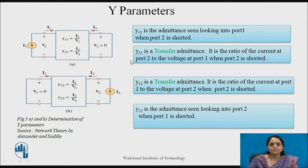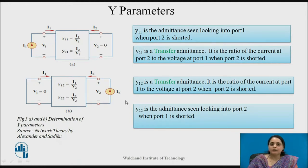Y21 is called the transfer admittance. In Figure 3b, port 1 voltage V1 has been short-circuited, and from this we can calculate Y12 and Y22. Y12 is called the transfer admittance, while Y22 is the admittance looking into port 2 when port 1 has been short-circuited.